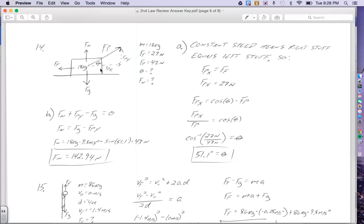So what's my right stuff? My right stuff is force of pull in the X direction. I do know that this force of pull here, the hypotenuse, is 43. But one thing I do know is my right stuff, force of pull in the X, equals my left stuff, which is force of friction. Force of pull in the X equals friction. But I have friction, given in the problem as 27 newtons, which means that my force of pull in the X is 27 newtons.